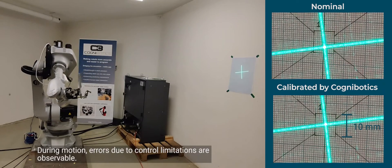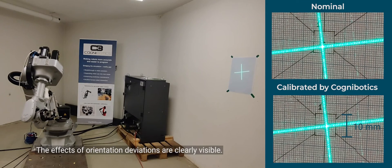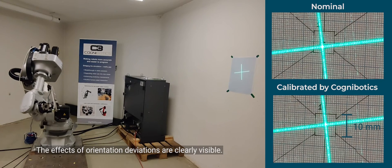During motion, errors due to control limitations are observable. The effects of orientation deviations are clearly visible.